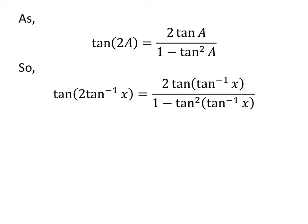So, tan(2 tan^(-1) x) equals 2 tan(tan^(-1) x) upon 1 minus tan squared of tan^(-1) x.